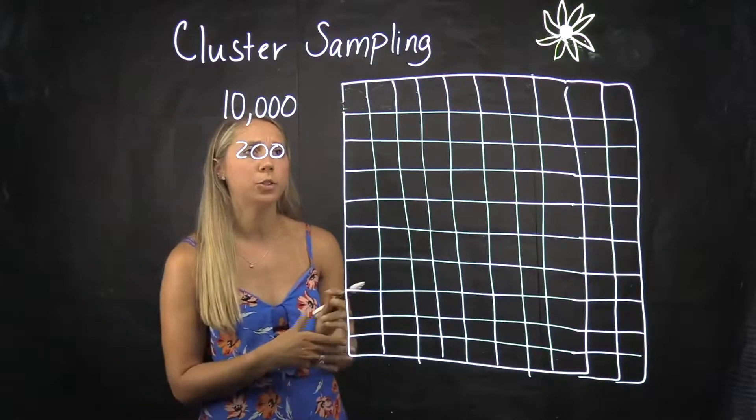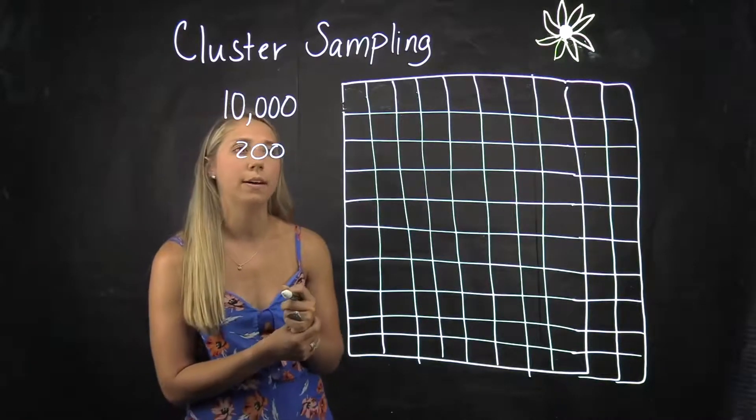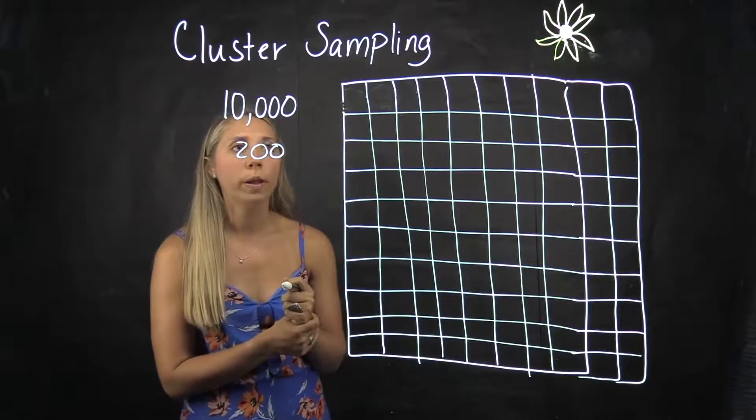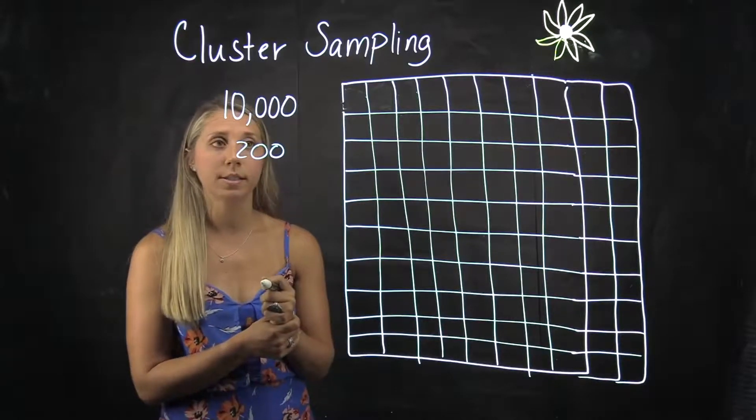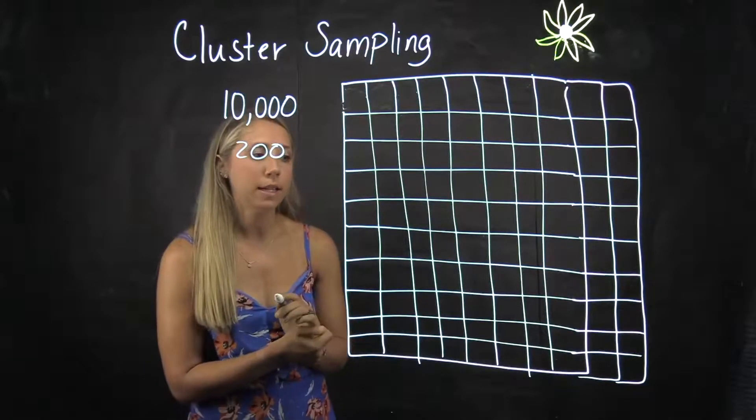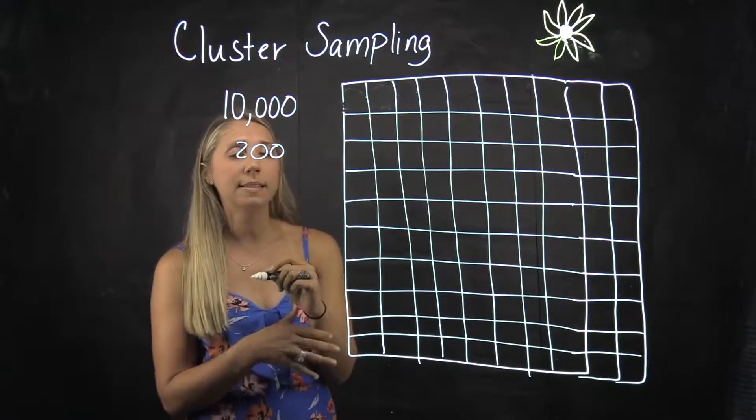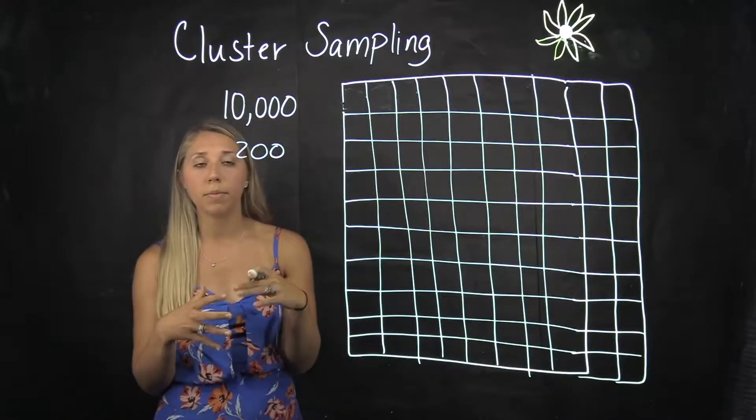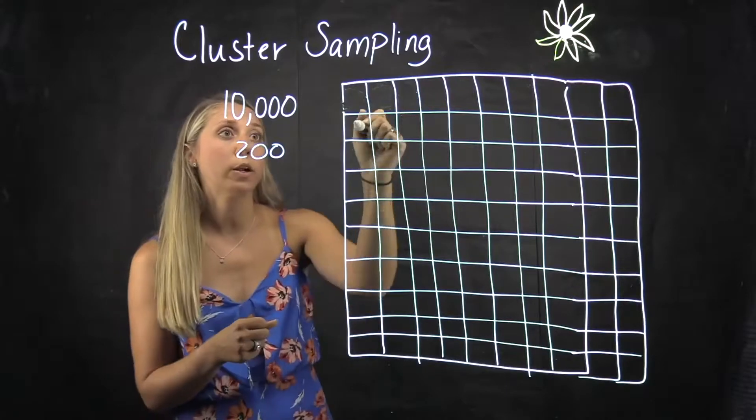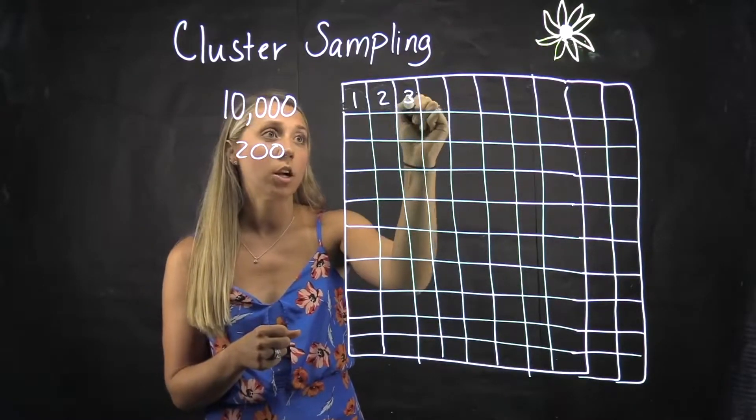Now if we only want 200 of them to measure and not measure all 10,000, which is our population, we can cluster sample. And so a cluster sample here is each square will be considered a cluster, but instead of numbering the sunflowers in each cluster, we're going to give each cluster a number.